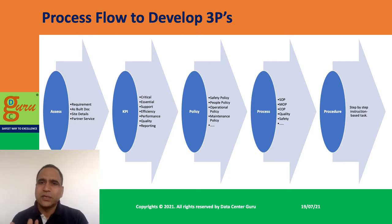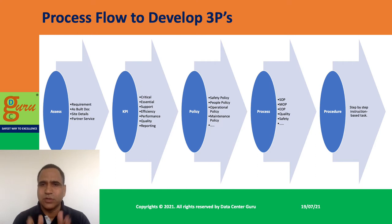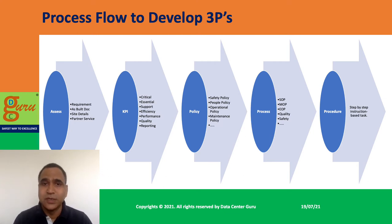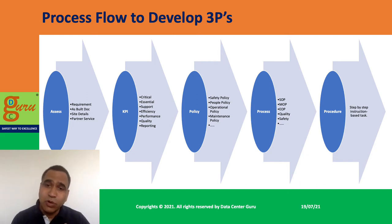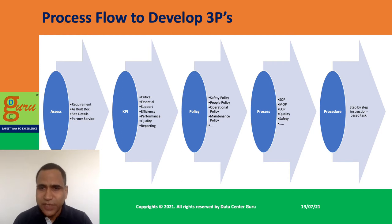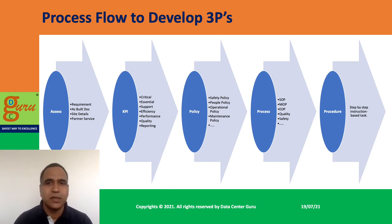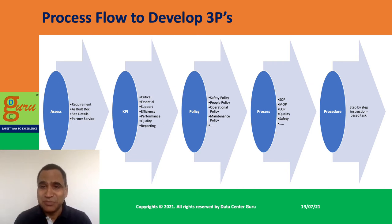In a typical operational sustainability program the broader process we see is the SOP — Standard Operating Procedures — which is the first thing. Whether it is a safety policy, security policy, or quality, you have to define standard operating procedures. Similarly you have to define SOPs for all the assets — how you operate those equipment, systems, or components on a day-to-day basis. You write detailed SOPs and detailed procedures for each.